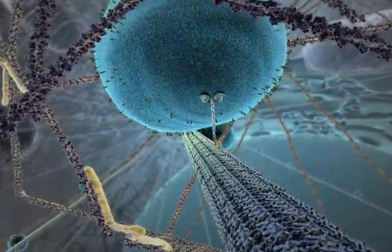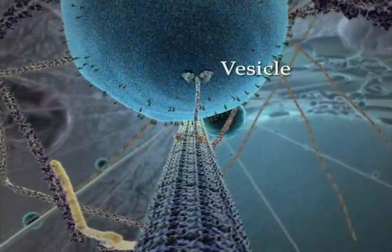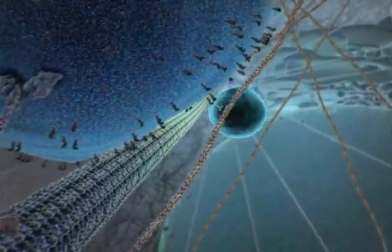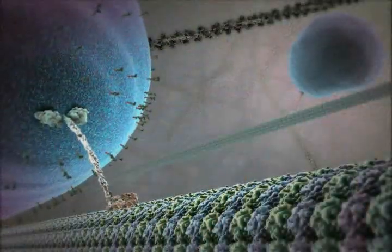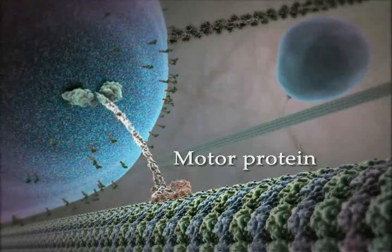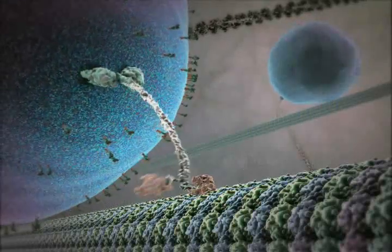Microtubules provide tracks along which membrane-bound vesicles travel to and from the plasma membrane. The directional movement of these cargo vesicles is due to a family of motor proteins linking vesicles and microtubules.